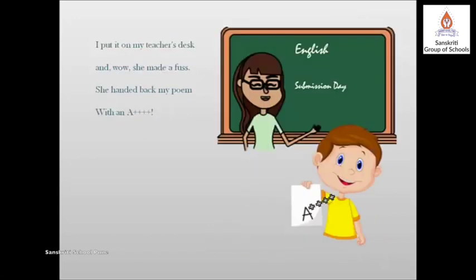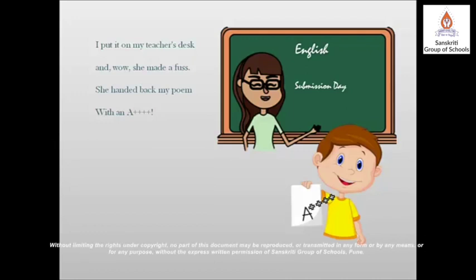'I put it on my teacher's desk. And wow, she made a fuss. She handed back my poem with an A++++.' Despite the lack of all the poetic devices the child mentioned, his teacher still gives him A++++. In the end, the child is appreciated for his attempt. The teacher has also realized it is fine not to include every figure of speech — at least he made a nice attempt.